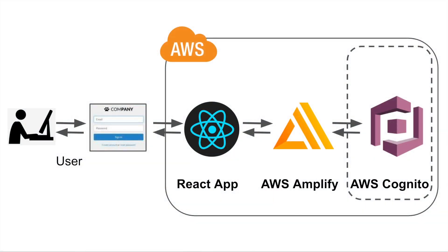Welcome back to another episode of AWS tutorial. Today I'm going to show you how to build a complete authentication system using AWS Amplify on a React.js app. AWS Amplify is a very powerful service that uses Cognito in the background, handling all the authentication logic and managing user pools and user identities automatically. You don't even need to do any setup on the Cognito side because Amplify configures everything for you.